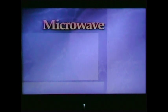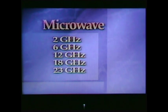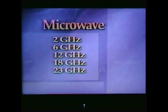Microwave is mostly used for point-to-point communications, and the bands are near 2 GHz, 6 GHz, 12 GHz, 18 and 23 GHz. Microwave channels can carry many simultaneous telephone channels in either analog or digital form.